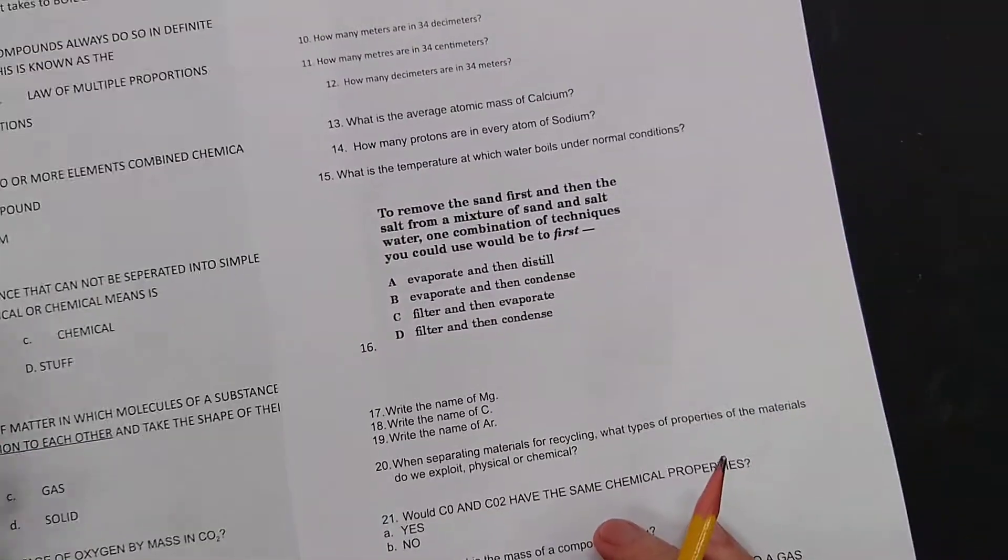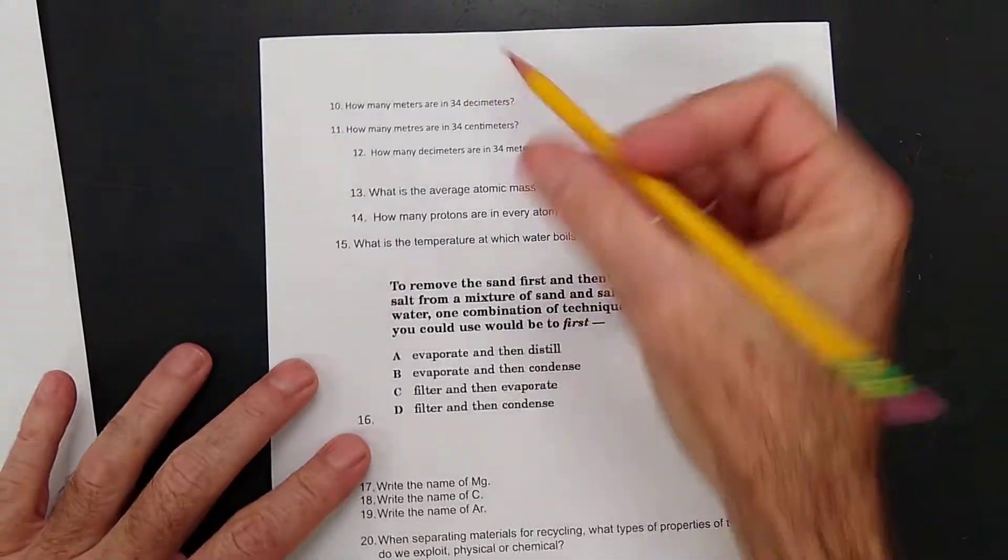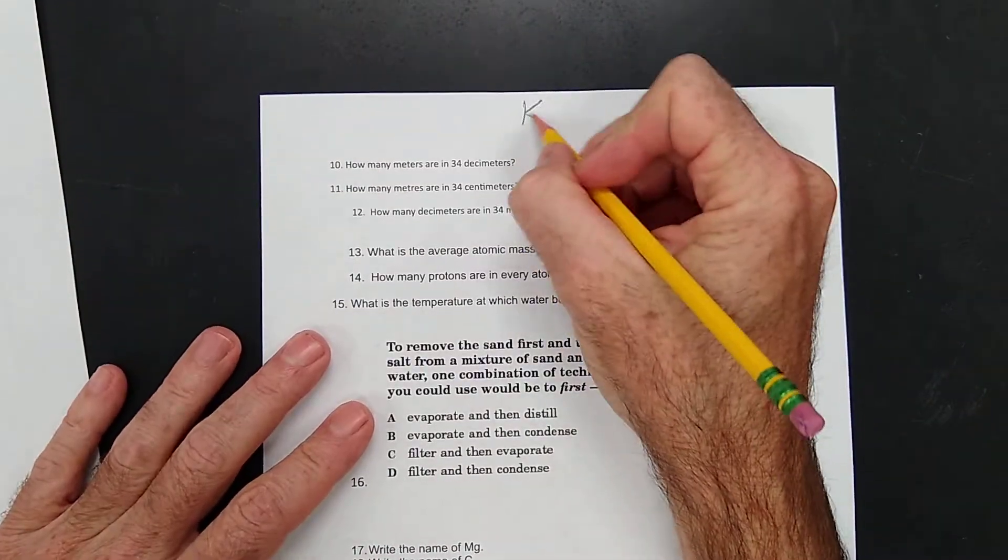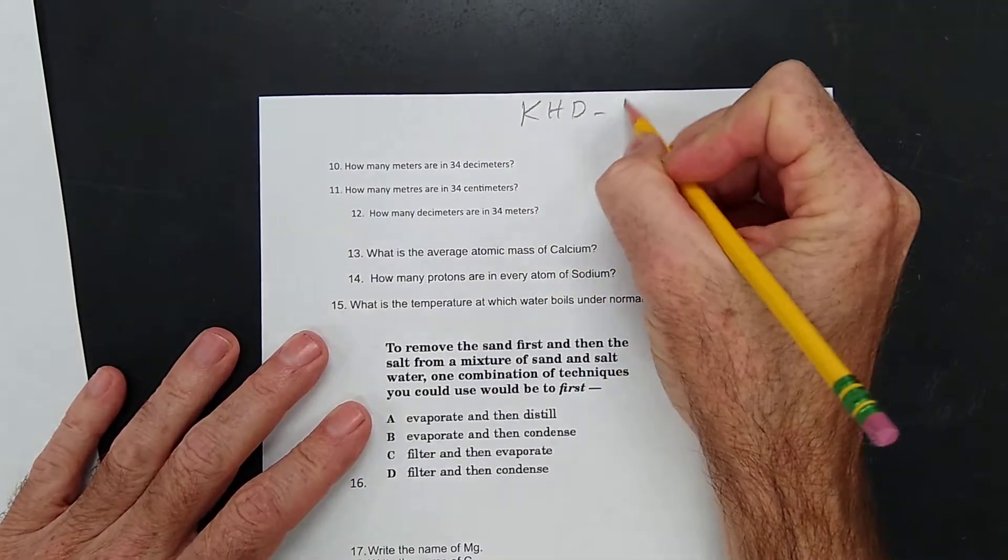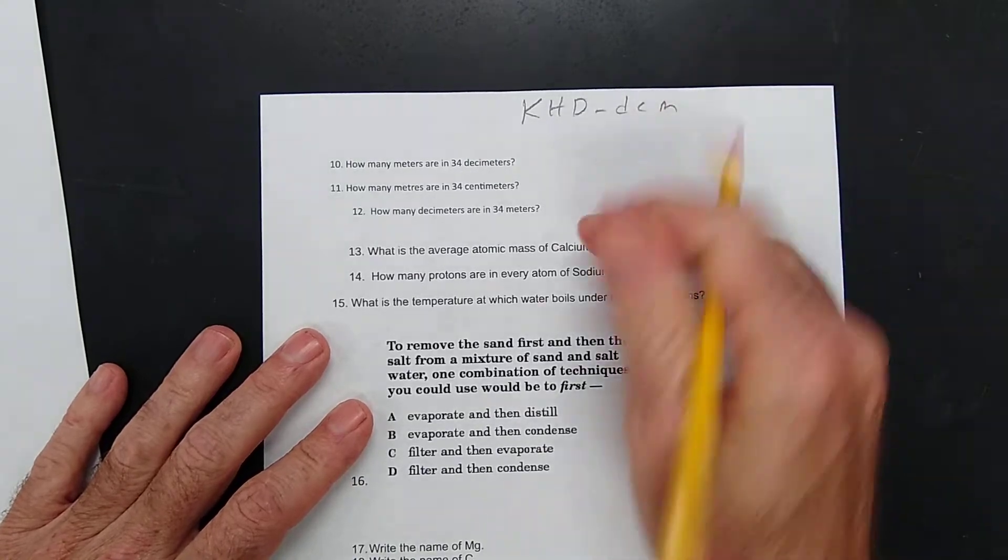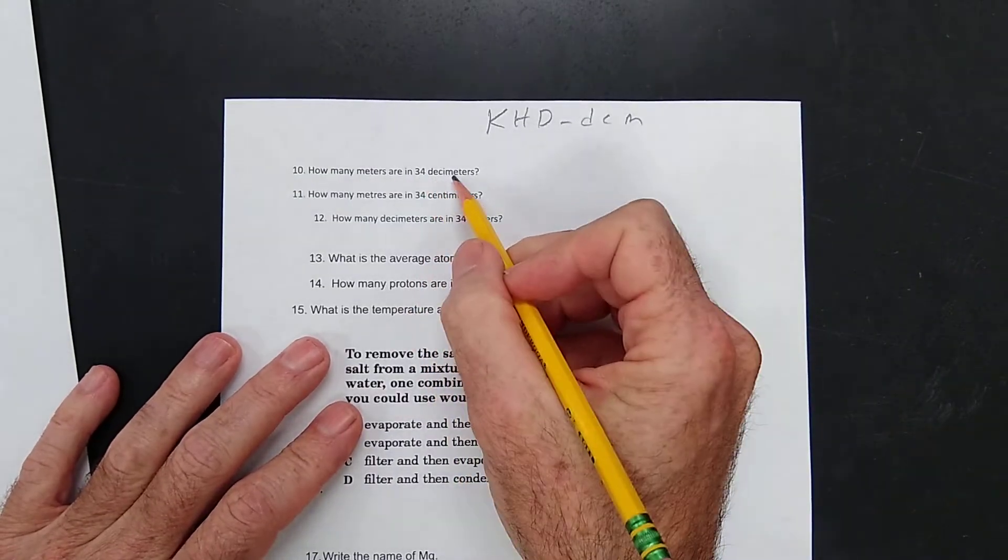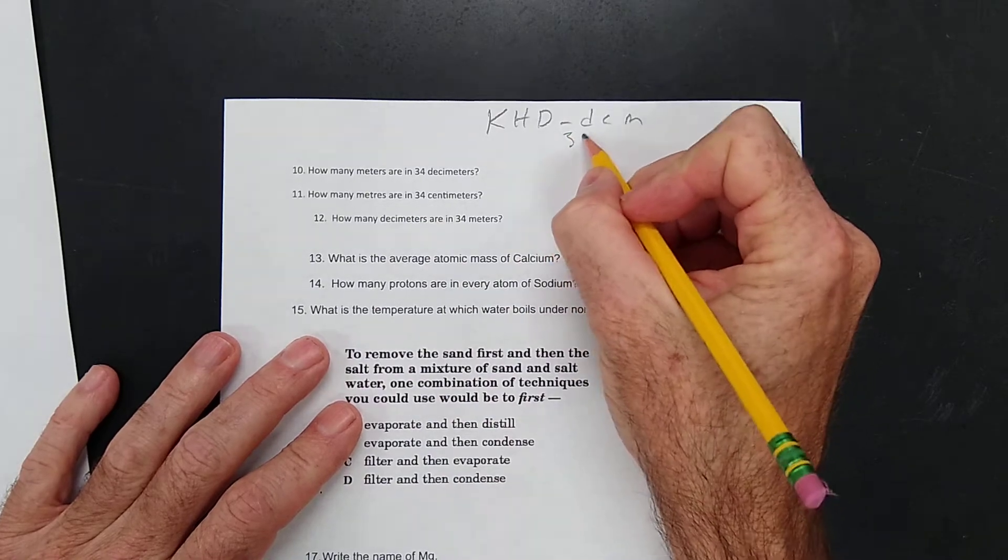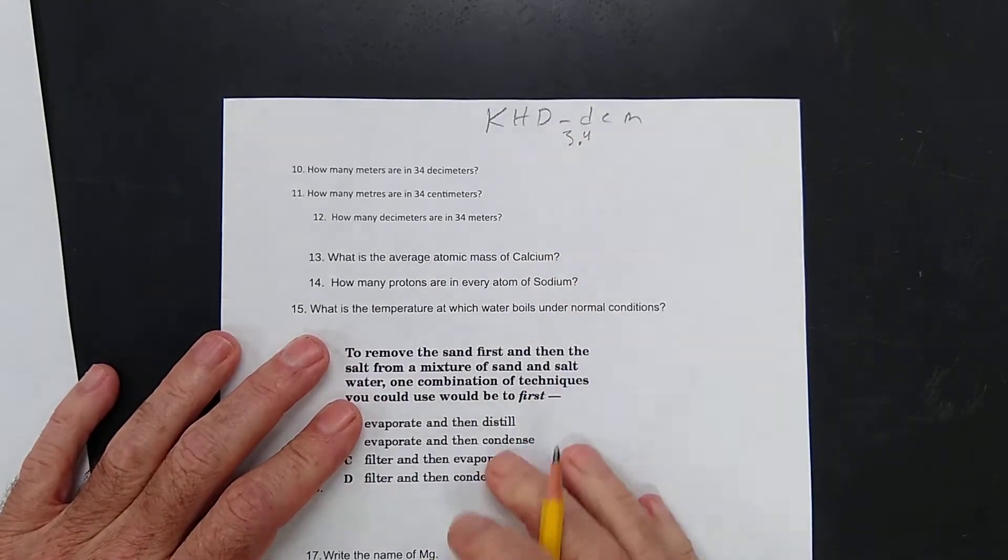This is from my notes. These are your conversions here: K, H, D, space, D, C, M. So, I don't know, 34, how many meters in 34 decimeters? 34 decimeters, 3.4.